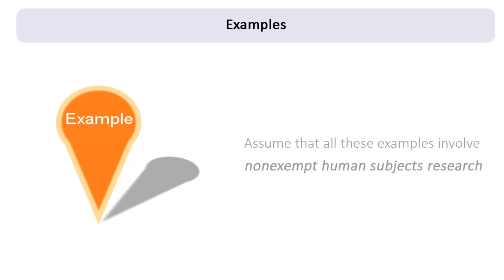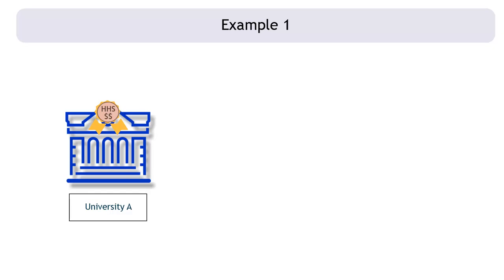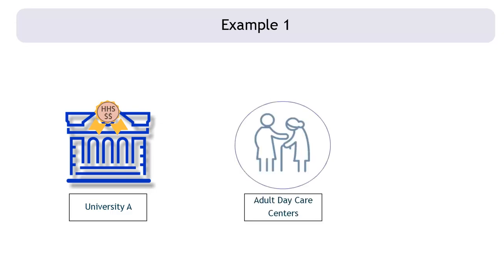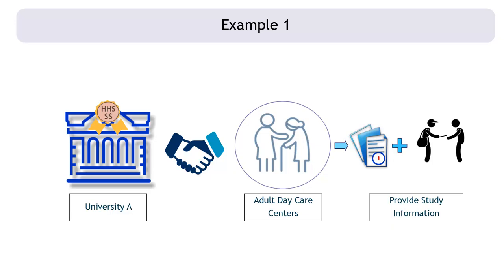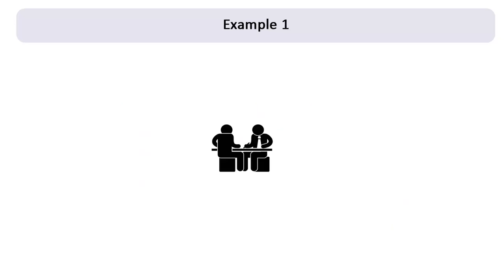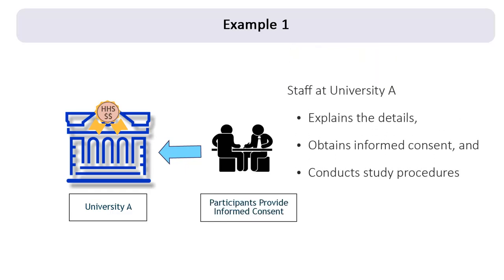Let's look at some examples. Assume that in all of these examples the determination has been made that they involve non-exempt human subjects research. University A is awarded an HHS grant to study the mental health of elderly subjects. Ten adult daycare centers in the region have agreed to help with recruiting study subjects. The centers will put up posters and distribute pamphlets with information about the study. Staff members at each center will inform center attendees about the study. Attendees who are interested in participating will contact research staff at University A to have the details explained to them and to provide their informed consent. All study procedures will also be conducted by staff at University A.